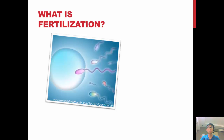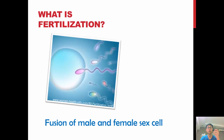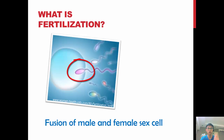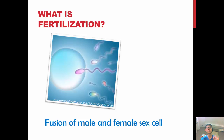So, what is fertilization? After the sperm have been deposited into the female, they will swim into the womb to locate the egg and fuse with it. Although millions of sperm are deposited, only some will make it to the egg, and only one sperm is needed to fuse with the egg. This fusion of male and female sex cells is known as fertilization.